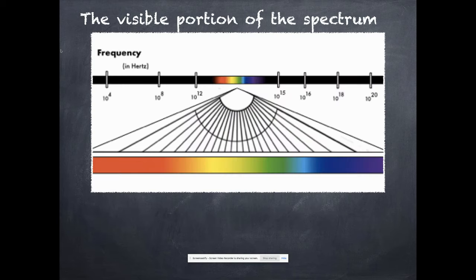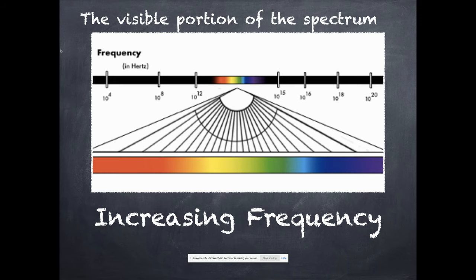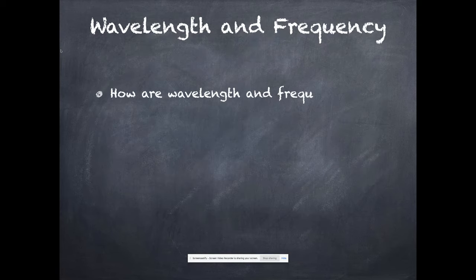So you kind of see a better representation of it here, where the colors just fade from one into the next. This is done by increasing frequency. Frequency that's getting bigger, left to right. And red is the low energy end. And the violet or purple is the high energy end. So the phrase red hot is a misnomer. Red is actually quite a cool color.